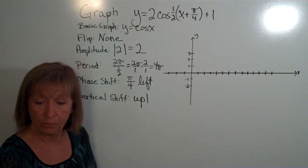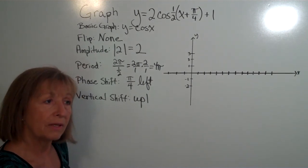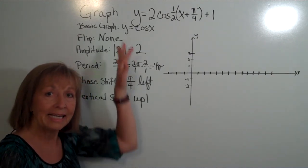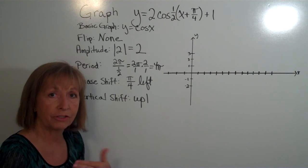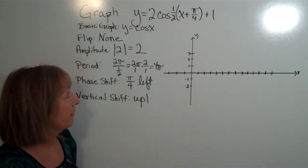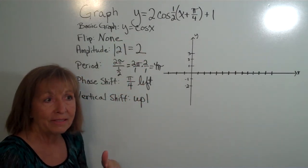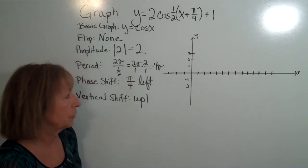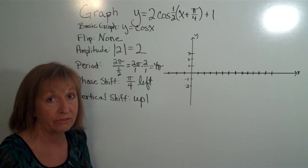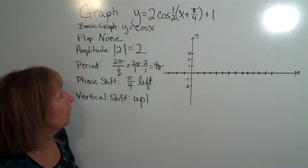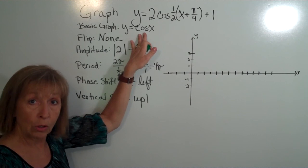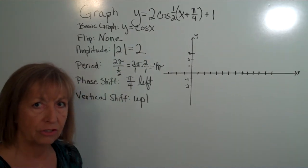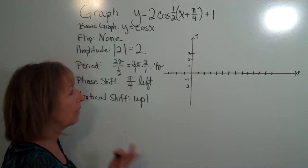Now, to graph this without guessing, we're going to use all the shift and stretch information in a specific order — doing it out of order can get confusing, especially when there are flips as well as vertical shifts. We start with the basic y = cos(x) and mark the horizontal axis in terms of our regular angles.